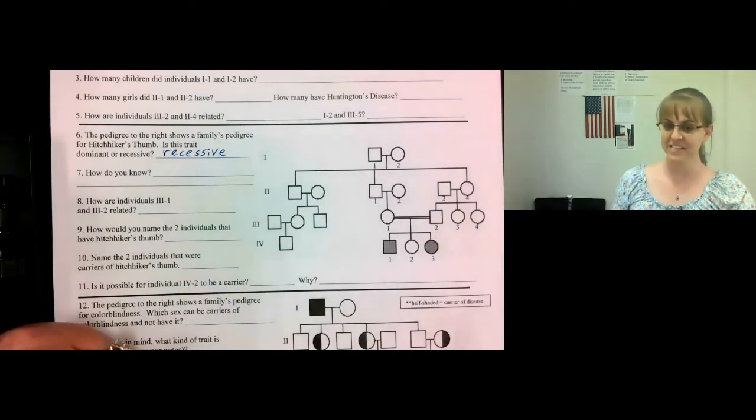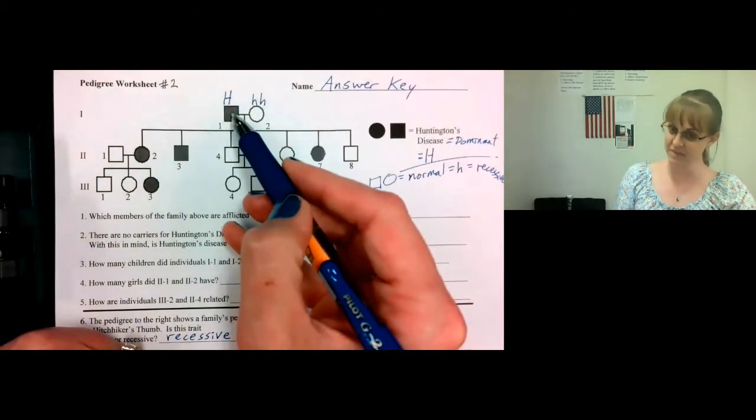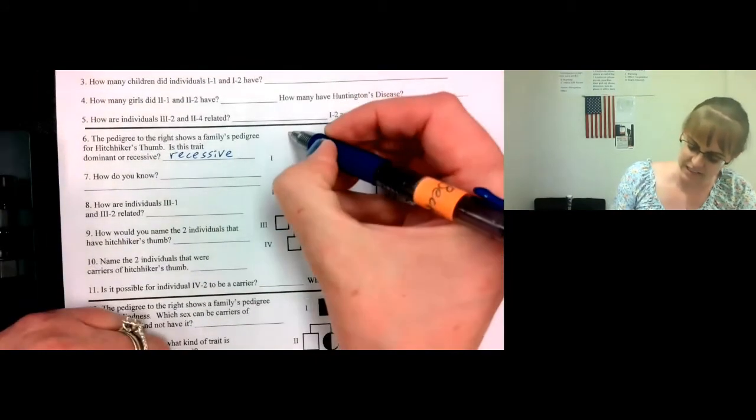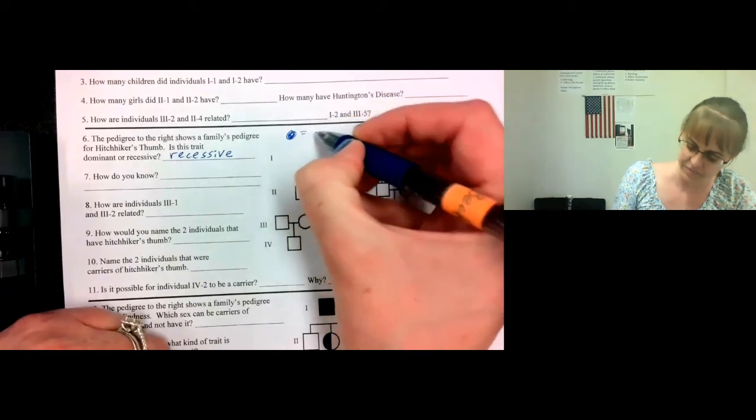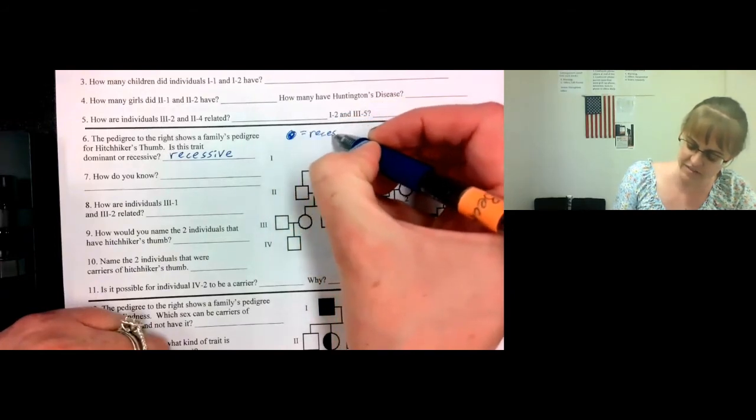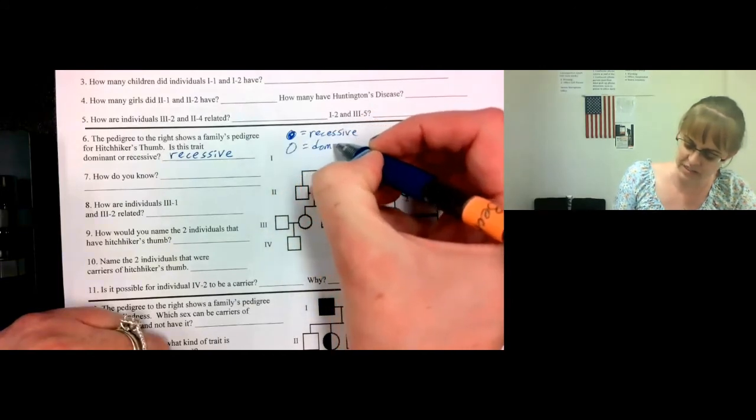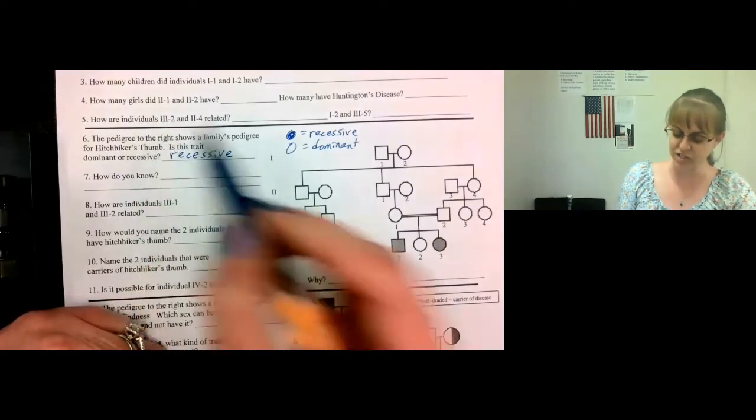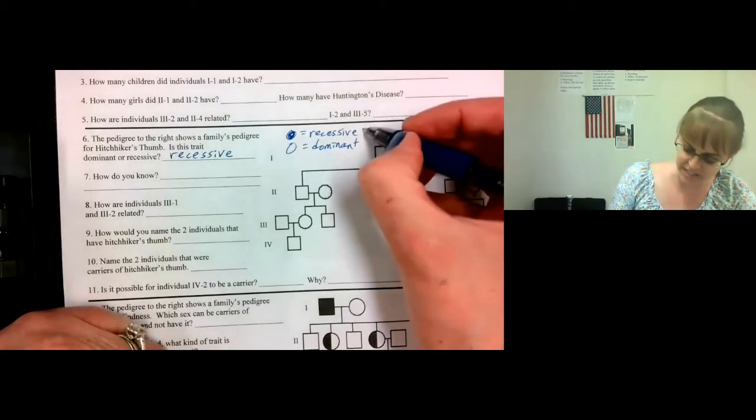So this time, they've colored the recessive ones. Last time, they colored the dominant ones. So let's make ourselves a little chart. If it's filled in, it's recessive. If it's hollow, it's dominant. They show the pedigree for Hitchhiker's Thumb. They colored the ones with Hitchhiker's Thumb. That's the recessive.